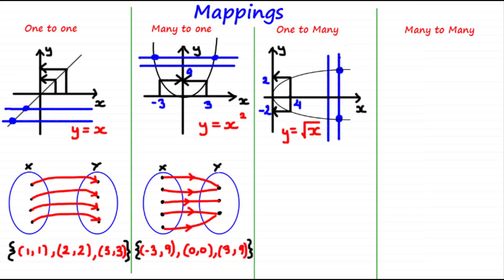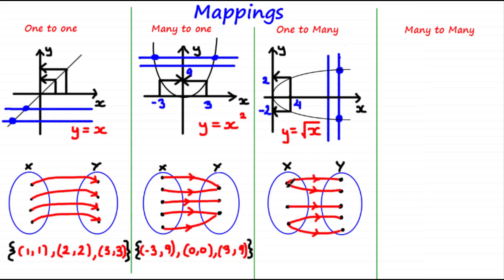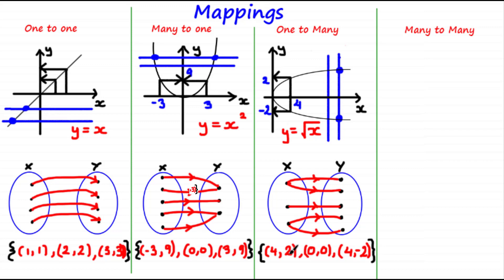You can also illustrate this type of mapping using a mappings diagram, showing that one element in set x maps onto two different elements in set y. Looking at a set of ordered pairs for a one-to-many mapping, we can see that when we input a value of x into y equals the square root of x we could get either y equals 2 or y equals negative 2. So the same value of x gives us different values of y — therefore this is a one-to-many mapping.